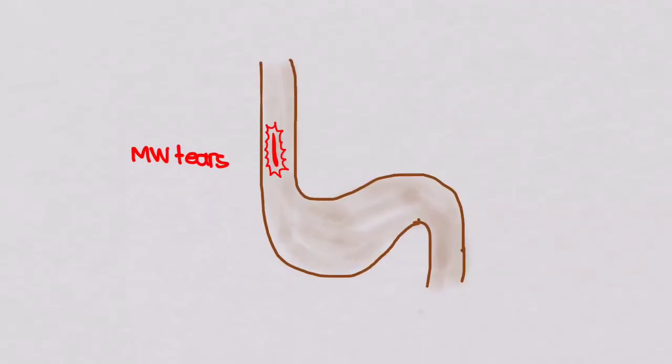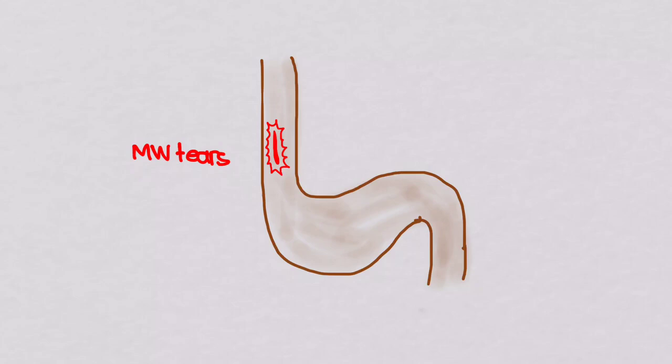Mallory-Weiss tears occur usually around the GE junction, and they are longitudinal tears in the mucosa that typically happen after severe episodes of retching and vomiting. Most of these don't need any other therapy other than to stop the vomiting because they're going to resolve on their own.